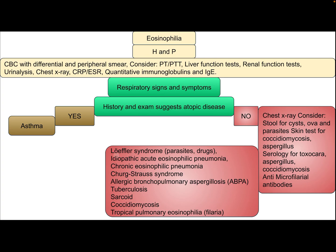Differential diagnosis for respiratory eosinophilia without atopy includes Loeffler syndrome (parasitic or drug), idiopathic acute eosinophilic pneumonia, chronic eosinophilic pneumonia, Churg-Strauss syndrome, allergic bronchopulmonary aspergillosis, tuberculosis, sarcoidosis, coccidiomycosis, tropical pulmonary eosinophilia, and filariasis.